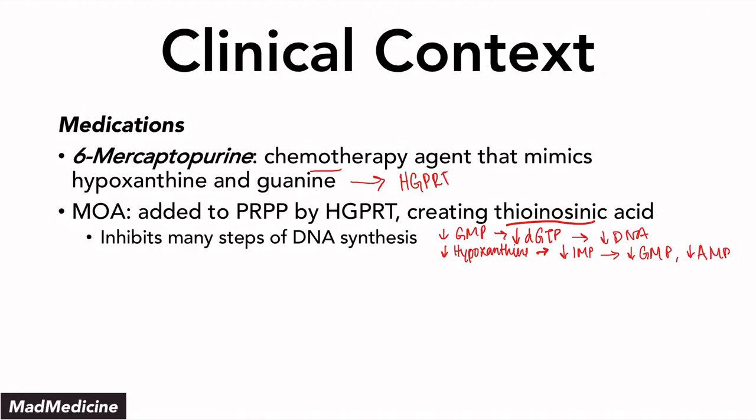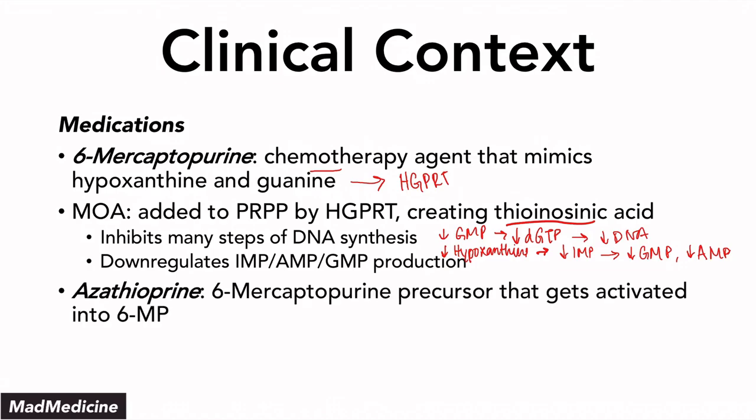GMP is obviously going to be affected more because you have two main mechanisms preventing it. At the same time, you're going to have a decrease in hypoxanthine, which causes a decrease in IMP, which in turn causes a further decrease in GMP and a lower decrease in AMP. This goes back to the example of blocking HGPRT — you're downregulating the production of IMP, AMP, and GMP, and that's a double hit on DNA synthesis. That's why 6-mercaptopurine works so well as a chemotherapeutic agent. Another medication to know is azathioprine, which is essentially a precursor to 6-mercaptopurine — when metabolized, it becomes 6-mercaptopurine and then functions the same way.